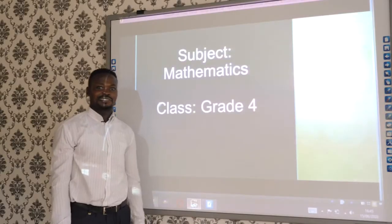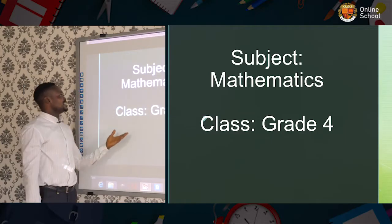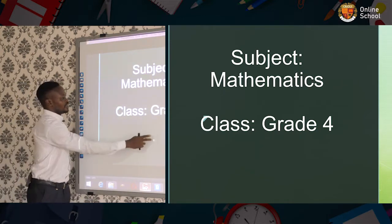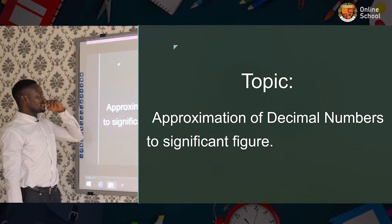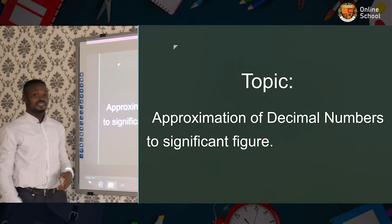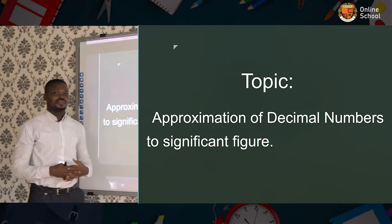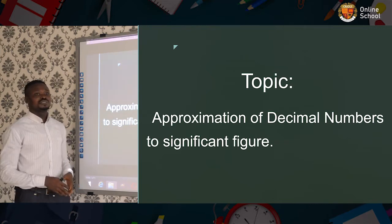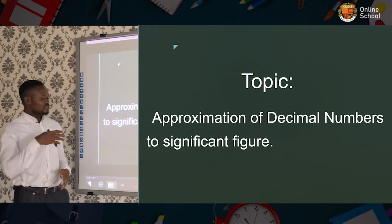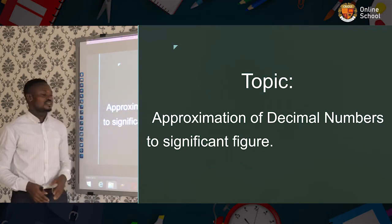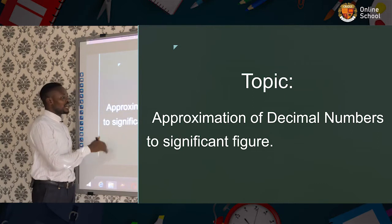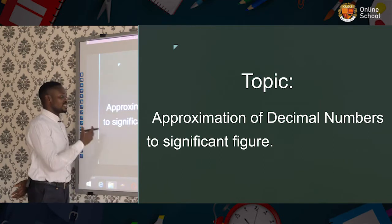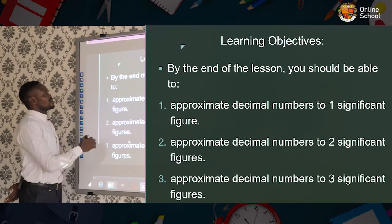Good day pupils, my name is Mr. Michael. Today we are going to look at the subject mathematics, and the topic is approximation of decimal numbers to significant figures. In our last class we talked about how we can approximate decimal numbers to two decimal places, one decimal place, to the nearest hundred, and to the nearest ten. But today we are going to look at how we can approximate decimal numbers to a given significant figure.